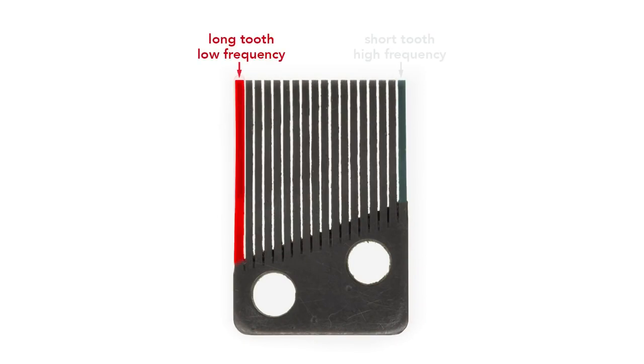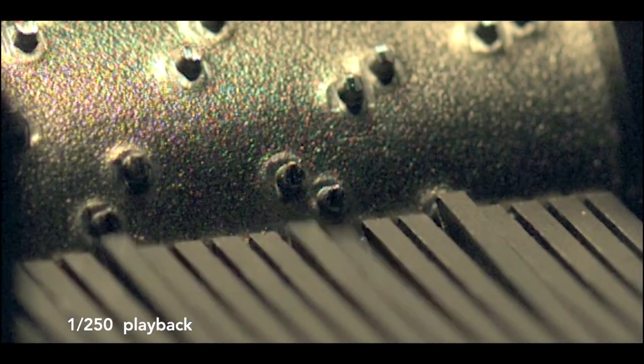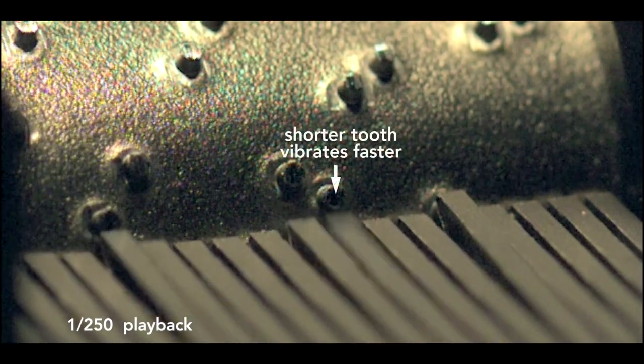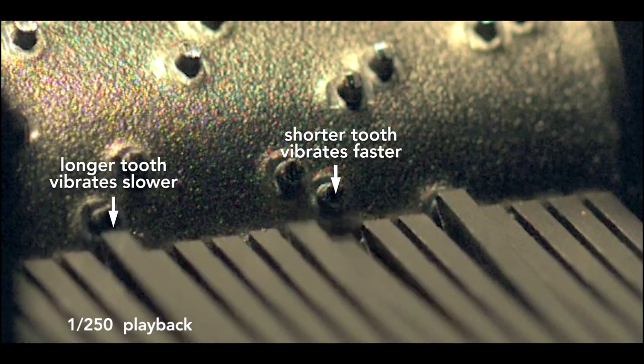Longer teeth are lower notes, and shorter teeth are higher notes. The comb works like a multi-pronged tuning fork. In this high-speed video, slowed by 250 times, the drum appears not to move, but you can see the teeth vibrate. The shorter tooth is vibrating faster than this longer one. These vibrations produce the sound.